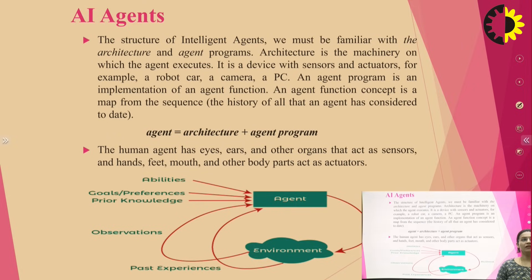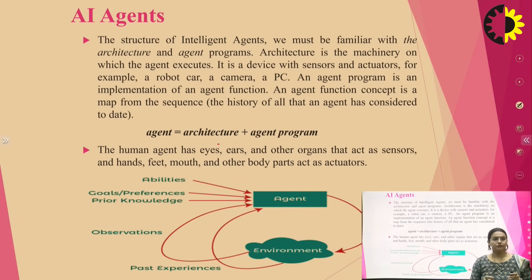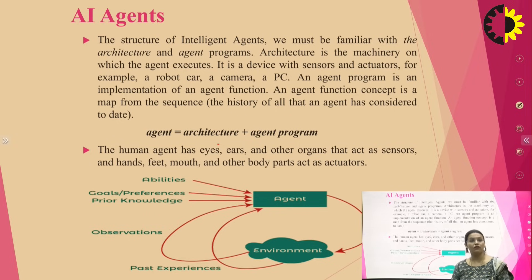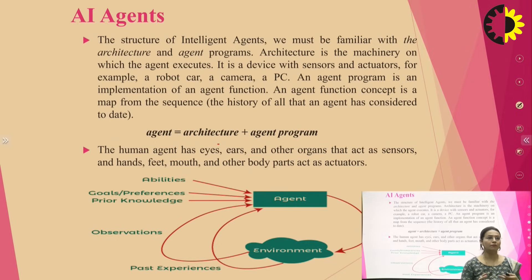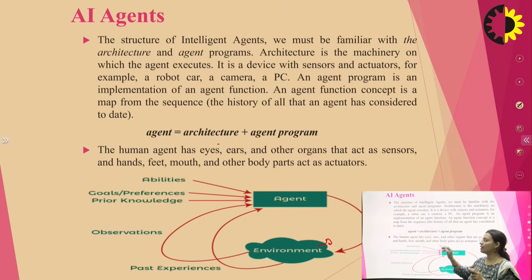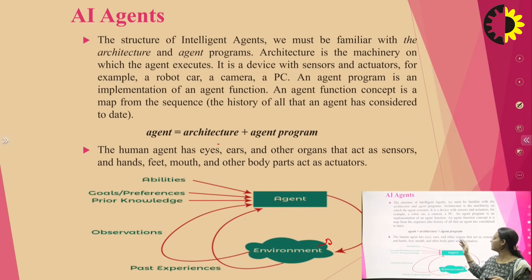An AI agent is also known as a mixture of architecture and an agent program. Architecture is basically the machinery in which the agent executes its working — it is a device with sensors and actuators, for example a robotic car, a camera, or a PC. The agent program is the combination of architecture and program. That agent program has an agent function, which maps a sequence to an action. In the case of a human, ears, eyes, and other organs are sensors, and hands, feet, and mouth act as actuators.